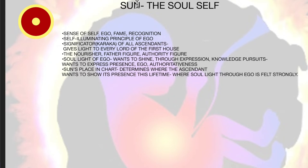So the sun or the soul's self — just to recap, what does the sun stand for? This is the symbol of the sun and it stands for a sense of self, ego, fame, recognition. The self-illuminating principle of the soul is the ego. It's a self-illuminating principle, meaning it does not require illumination from an external source. It wants to find its illumination in and of itself. That's why it feels the ego.